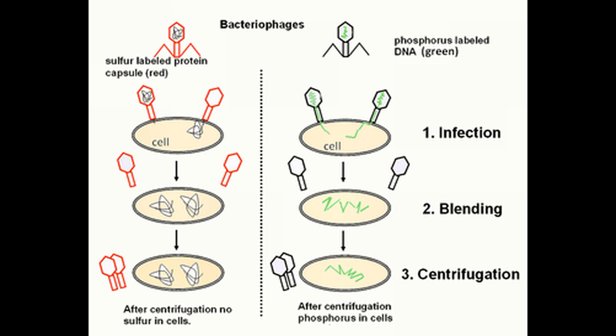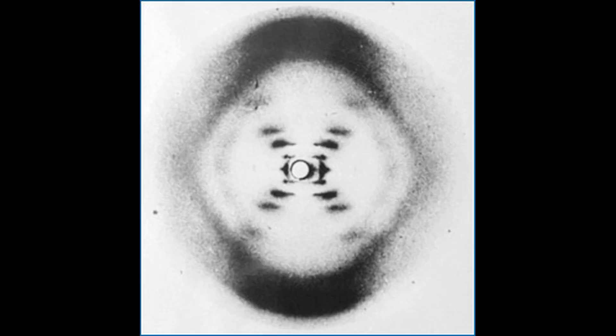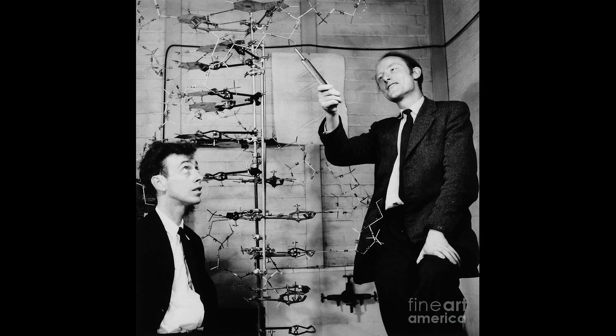By then there was a race to figure out the structure of DNA. Stoichiometric work by Astbury and Bell in 1938 showed that DNA has a regular structure, and working off x-ray images taken by Rosalind Franklin and Maurice Wilkins, James Watson and Francis Crick finally detailed the double helix structure of DNA.